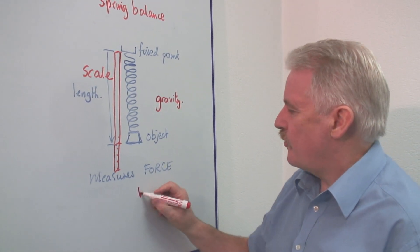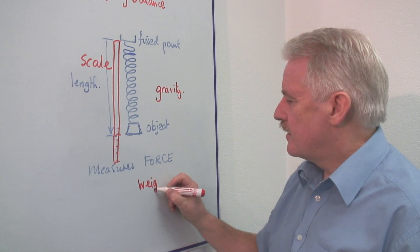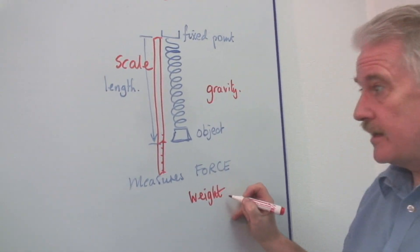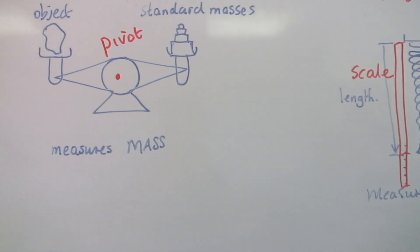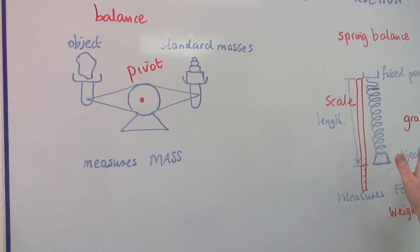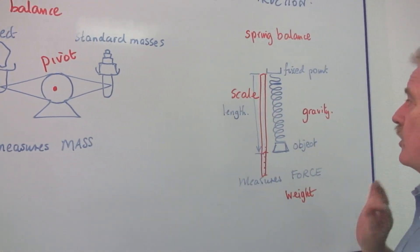So this measures force or weight. And we know that you can be weightless. This measures mass. You cannot be massless. So we have these kind of different objects.